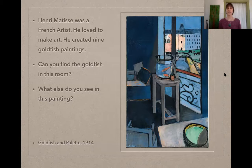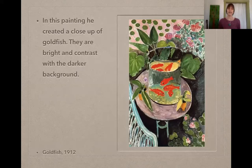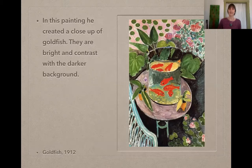This painting is called Goldfish in Palette and was created in 1914. In this painting, he created a close-up of goldfish. They are bright in contrast with the darker background. This painting is just called Goldfish and was created in 1912. You'll notice how the goldfish really pop out. He used the orange in juxtaposition with the darker green, which made a lot of contrast. When you can see something easily in art, we call it contrast.